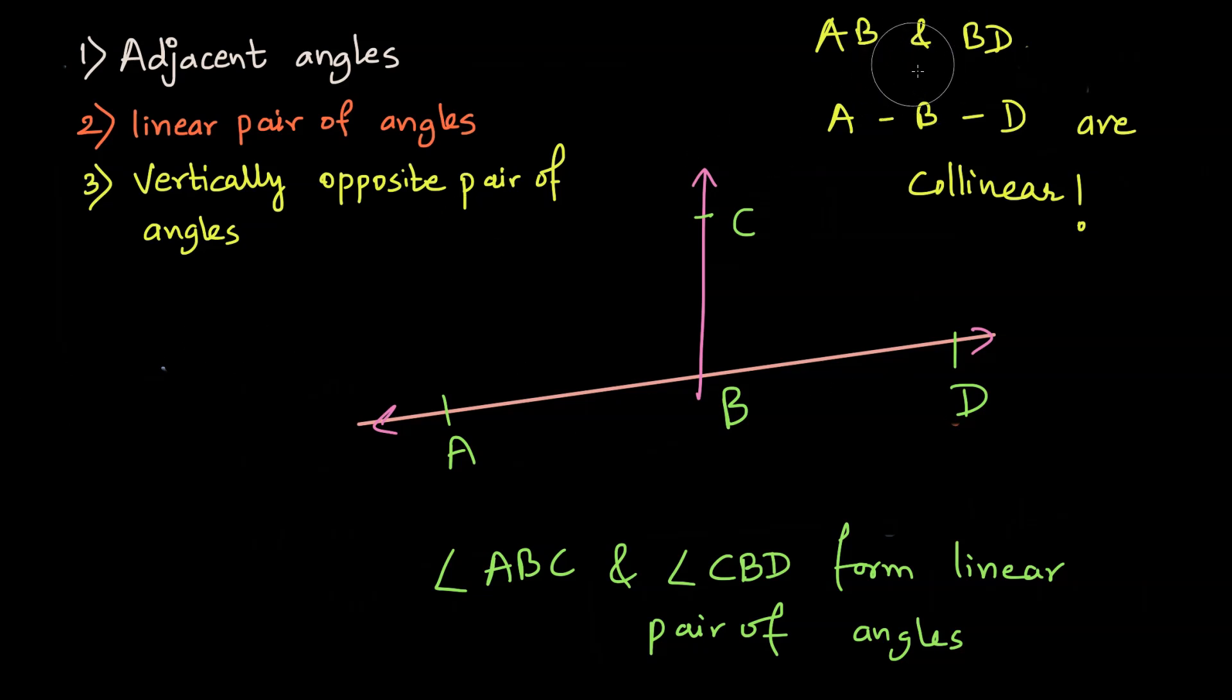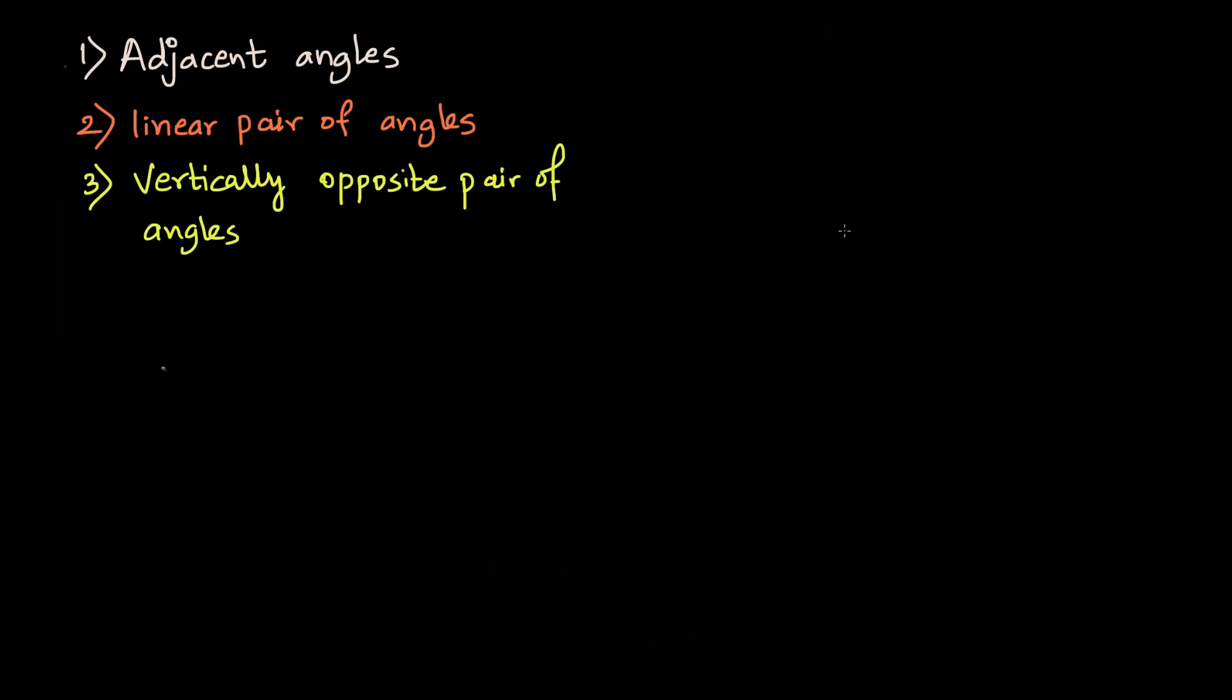What about vertically opposite pair of angles? In vertically opposite pair of angles, you see a cross like this forming. So basically whenever you have two lines intersecting, you just have to look at the angles which are opposite to each other. Basically something like this or something like this.